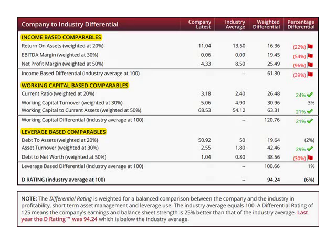There are a total of nine variables that make up the D rating: three income-based ratios, three working capital ratios, and three leverage-based ratios.